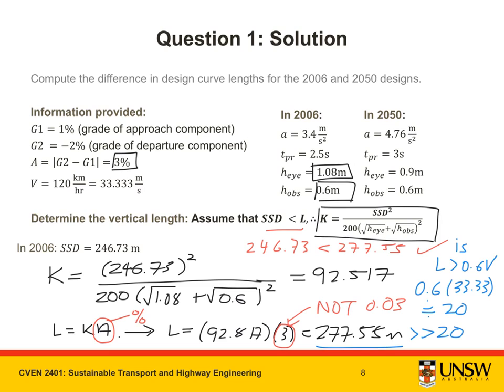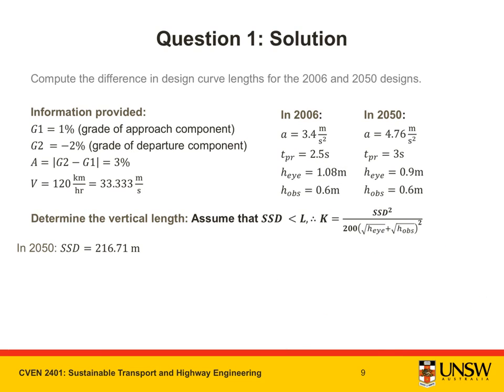So now we have our vertical curve length for the 2006 scenario. Now let's go ahead and calculate our vertical curve length for the 2050 scenario. Repeating our steps, we are going to assume that SSD is less than L again, and therefore use this same equation for K.